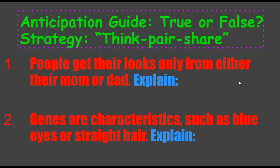On the anticipation guide, for questions one and two on the left-hand side, please write true or false. Number one: people get their looks only from either their mother or father — true or false? Number two: genes are characteristics such as blue eyes or straight hair — true or false?